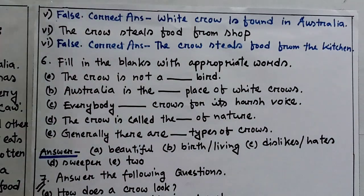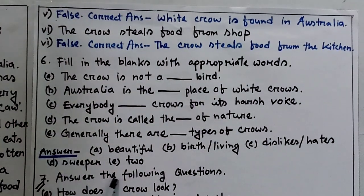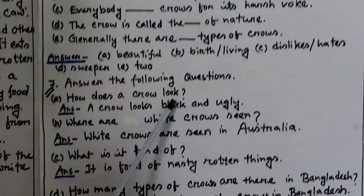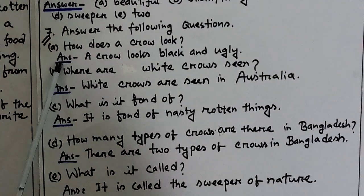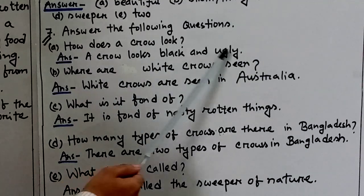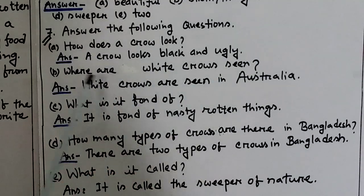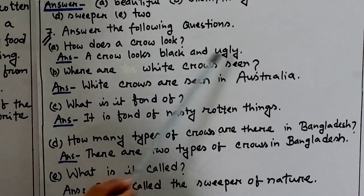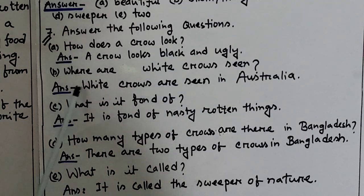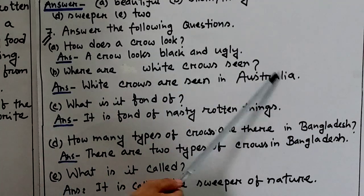Answer the following questions. Question A: How does a crow look? Answer: A crow looks black and ugly. Question B: Where are white crows seen? Answer: White crows are seen in Australia.